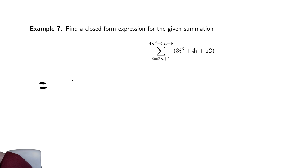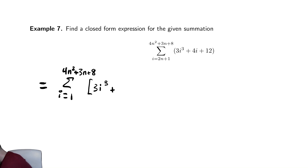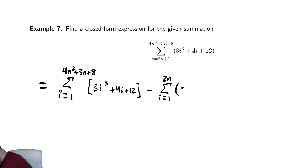This is equal to the sum from i equals 1 to the top bound, 4n squared plus 3n plus 8, of 3i cubed plus 4i plus 12, minus the sum from i equals 1 to the bottom bound minus 1, which is 2n, of the same thing: 3i cubed plus 4i plus 12.